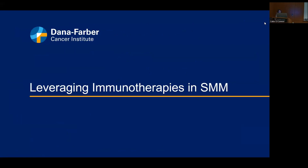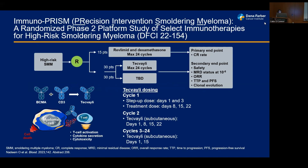Immune therapies showing impressive responses in relapsed/refractory myeloma — can we leverage these in smoldering myeloma? At this stage, individuals' immune systems are likely less deranged than at refractory stages, tumor burden is theorized to be smaller, and this may allow us to avoid certain side effects of conventional therapies, opening a new potential door for investigation. The Immunoprism study currently underway at Dana-Farber evaluates the usage of bispecific antibodies in high-risk smoldering myeloma patients.